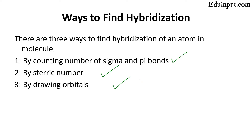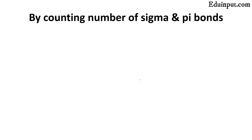The first two methods are very simple and tricky, making the process of finding hybridization much easier for intermediate level students. Let us start with the first method: counting the number of sigma and pi bonds. Suppose we have the molecule CH4. This method is for students who have some knowledge about the geometry and shapes of molecules. In this case, methane CH4.